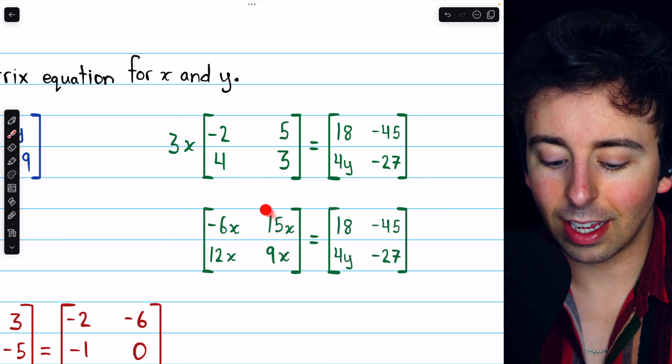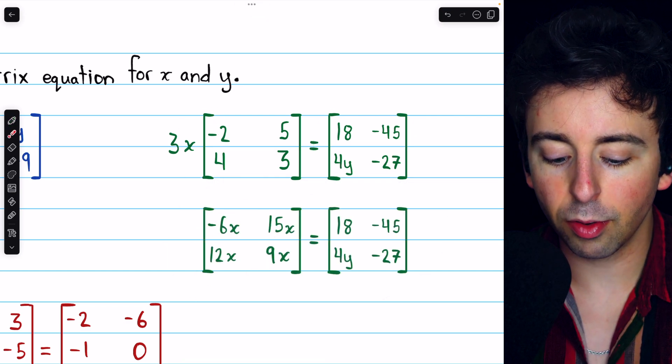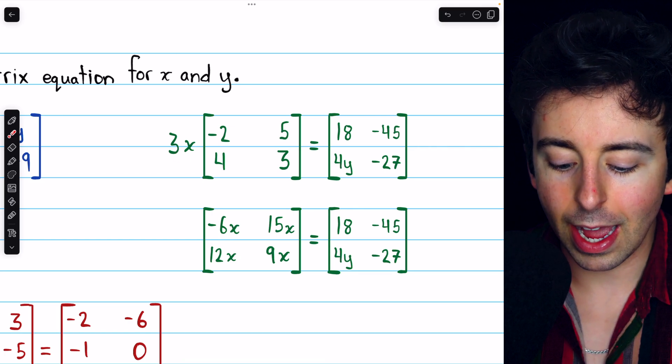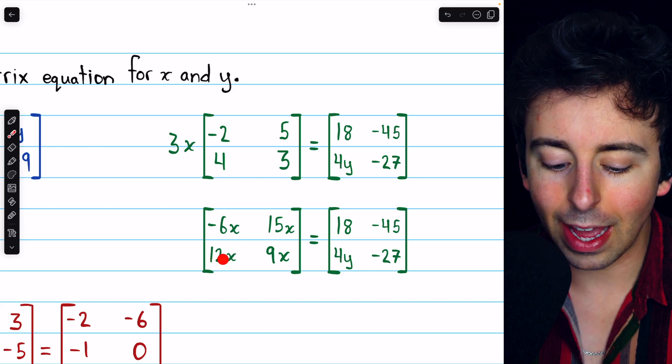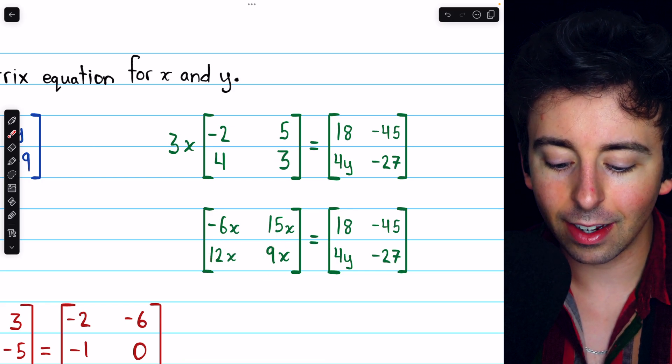Distributing the 3x gets us here. Negative 2 times 3x is negative 6x. 5 times 3x is 15x. 4 times 3x is 12x. And 3 times 3x is 9x.